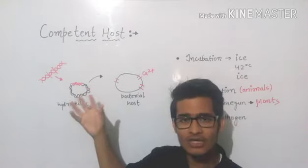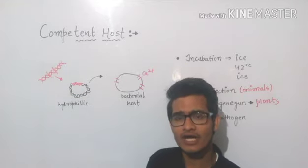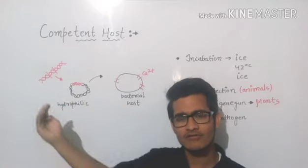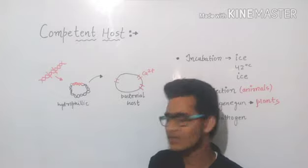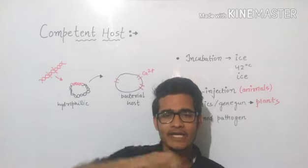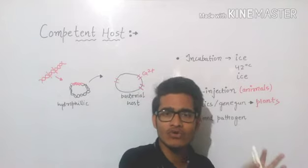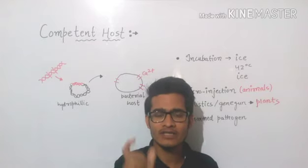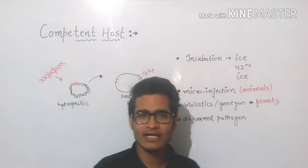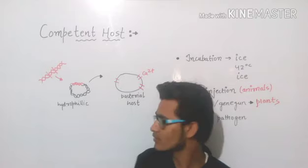We will integrate our gene of interest into the plasmid so that we can send it to the host organism. This is the very basic scheme: we isolate our gene of interest, integrate it with the plasmid, and then send that plasmid into the host organism so that it can express that particular gene of interest to produce a desired character or desired product, because a gene usually gives a product.